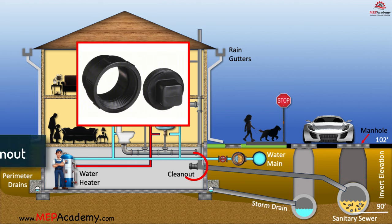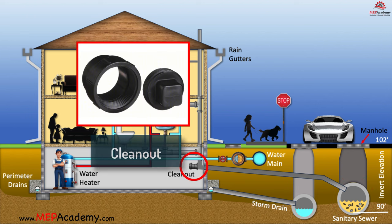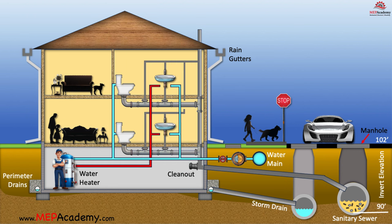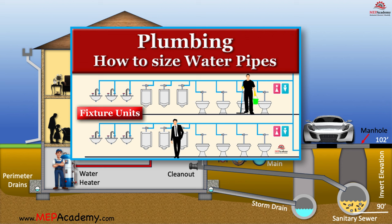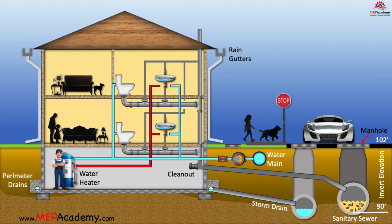Periodically, you'll come across cleanouts like this one. These provide access to the inside of the pipes in case of a blockage and are required by your local code. In the United States, many homes have these cleanouts located outside for easier access by plumbers. Plumbing pipe sizes are based on what is called fixture units. Each type of fixture is given a fixture unit value that corresponds to a pipe size, and the code contains a chart listing these values. Main stacks range from 3 to 4 inches, depending on code requirements and municipal regulations.